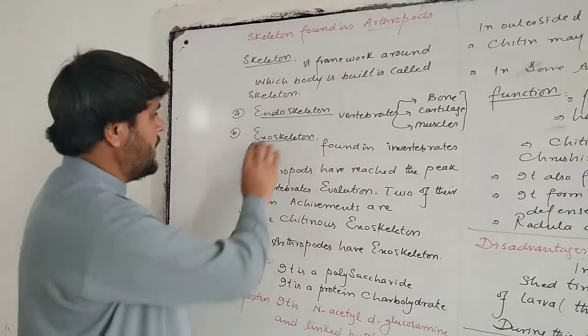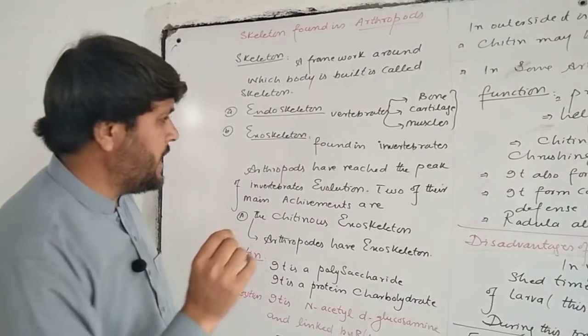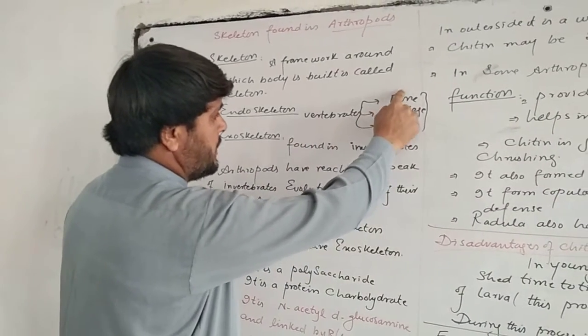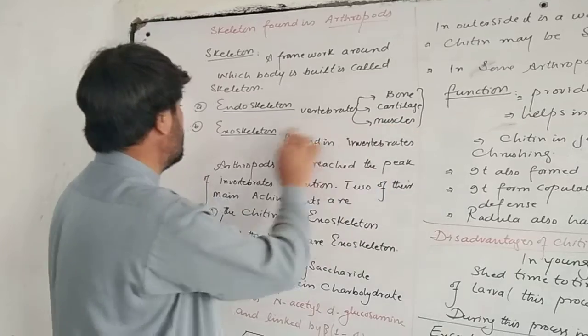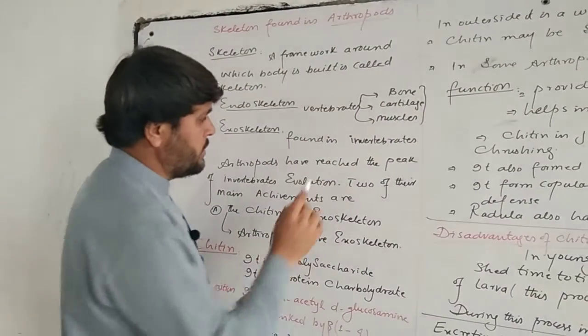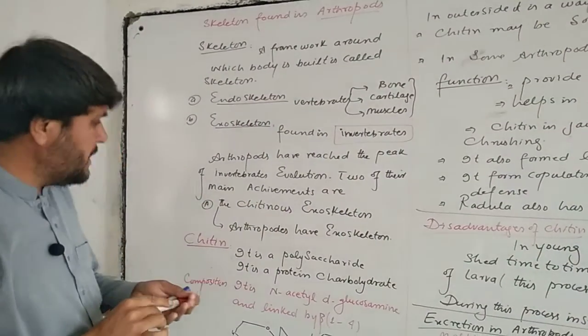There are different types of skeleton. The endoskeleton - it is the special and advanced type of skeleton which is found in vertebrates. In vertebrates there are bones, cartilage, or muscles. Exoskeleton is found in invertebrates.